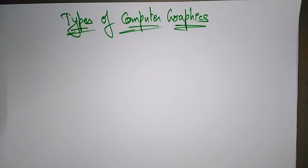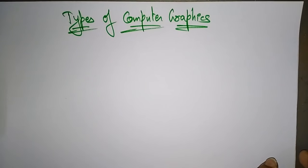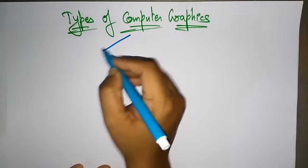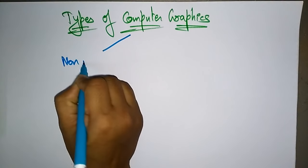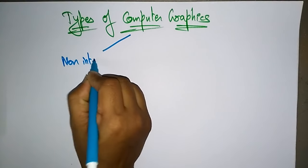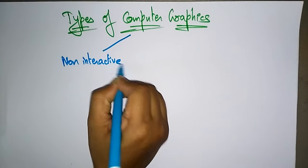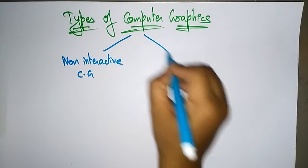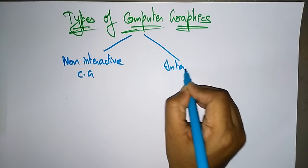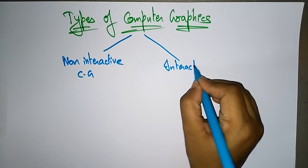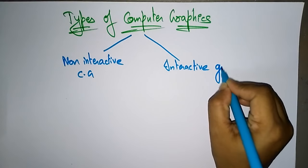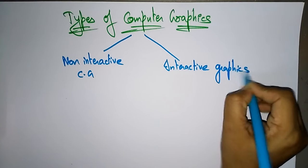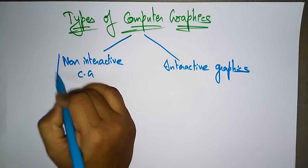Welcome back. Let's continue with our subject, computer graphics. The next topic is the types of computer graphics. There are two types: one is non-interactive computer graphics, and another is interactive computer graphics. These are the two different types of computer graphics.